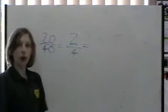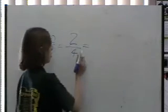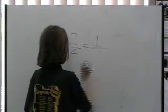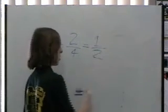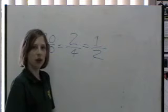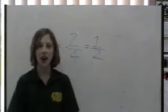But we can go even further, because 2 goes into both of them. 2 goes into 2 once, and 2 goes into 4 twice. It's 1 half. Nothing else goes into 1 half, because as soon as it gets to the 1, nothing else can go into it.